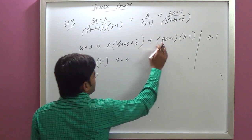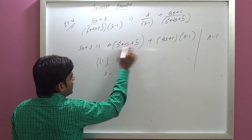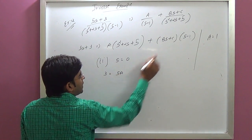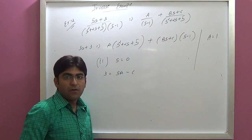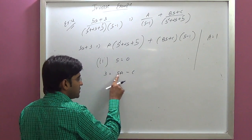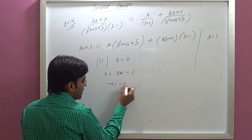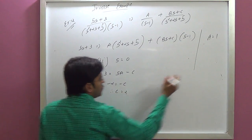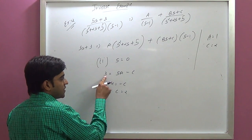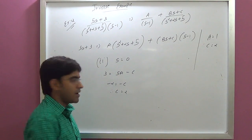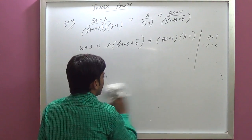Second, put S equal to 0: the B terms go to zero. With A equal to 1, we get 3 equals 5A minus C, that means 3 minus 5 equals minus C, so C equals 2.